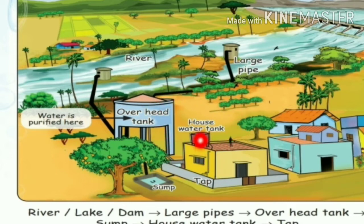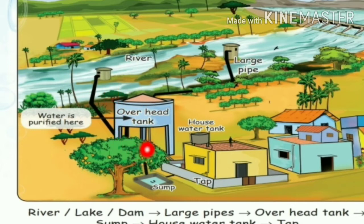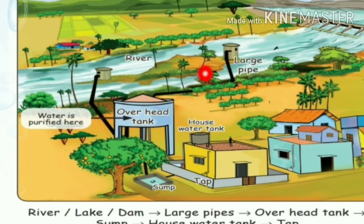We connect the river using a large pipe. The large pipe will fill the overhead tank. The river water will come through the large pipe. We use this to get water from the river.